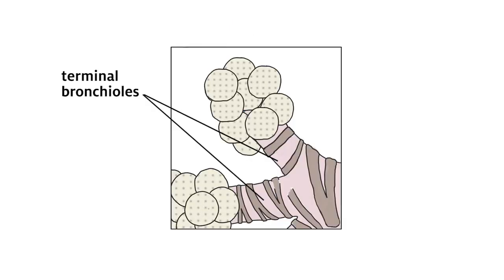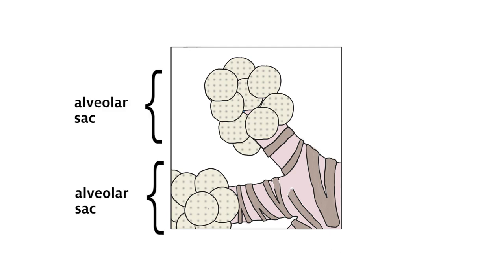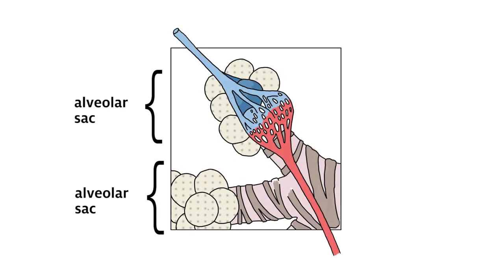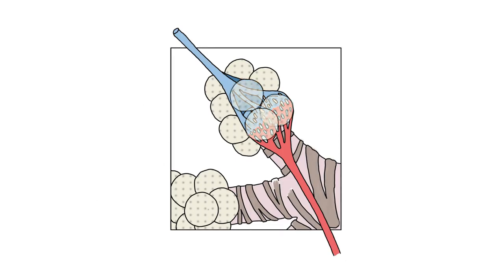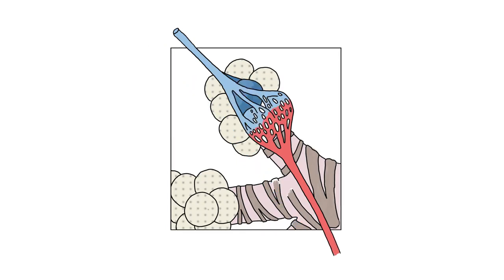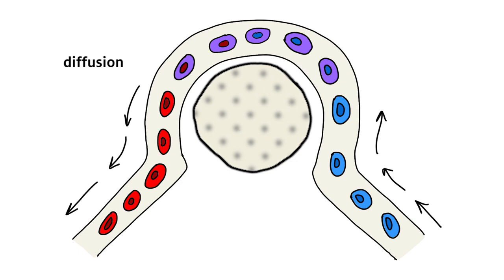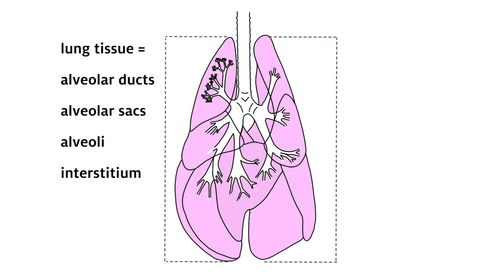The terminal bronchioles give way to alveolar ducts, then alveolar sacs, and finally alveoli as continued branching occurs. Alveolar sacs consist of two or more alveoli that share a common alveolar duct opening. Gas exchange takes place within the alveoli. Alveoli are small spaces that consist of a very thin epithelium closely opposed to pulmonary capillaries. This allows for gas exchange to occur by diffusion, with oxygen diffusing into the capillaries and waste gases such as carbon dioxide diffusing from the capillaries into the alveolus. The alveolar ducts, sacs, and alveoli, surrounded by interstitium, collectively make up the lung tissue.